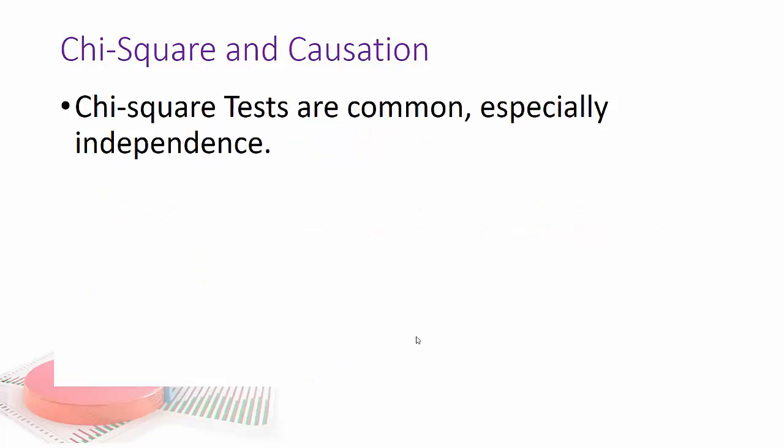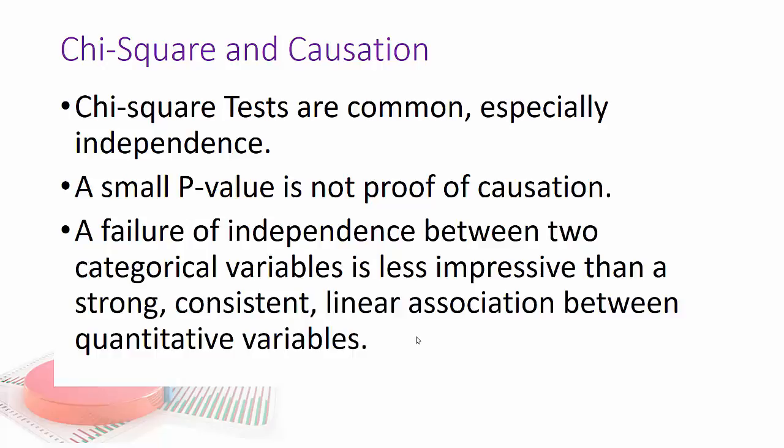Chi-square tests are common, especially independence, but a small p-value is not proof of causation. So if you see a failure of independence between two categorical variables on a chi-square test, it's not as impressive as showing a strong consistent linear association or correlation between quantitative variables. That said, we can't really, on categorical variables, normally do a linear regression. So let's go ahead and do some chi-square tests.